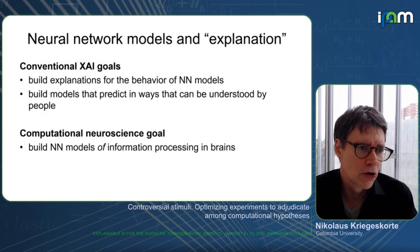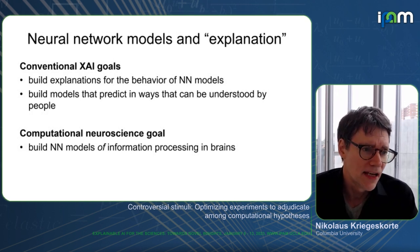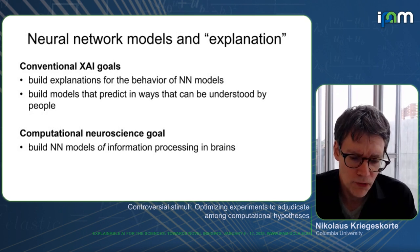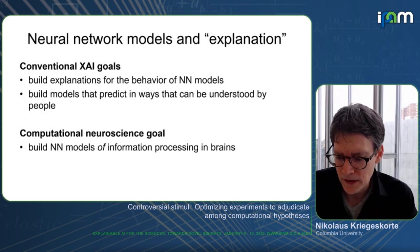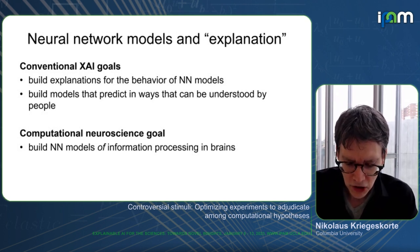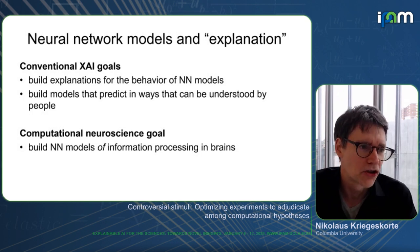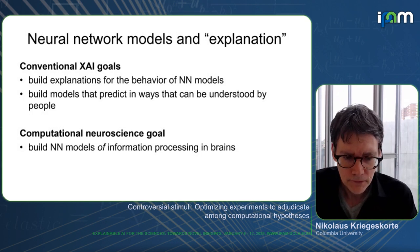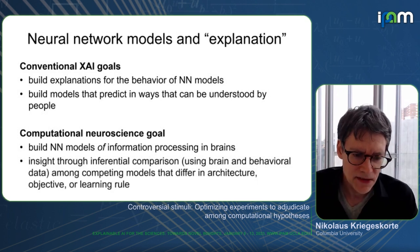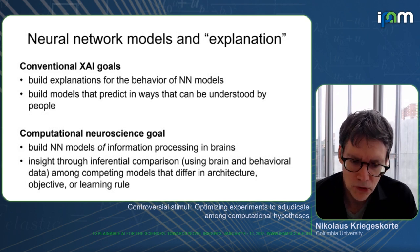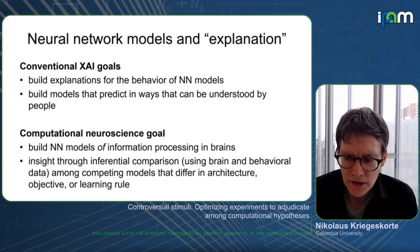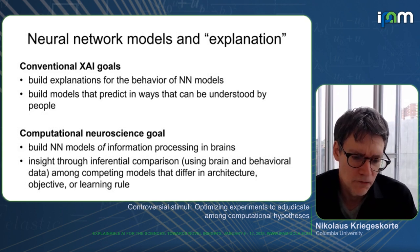These are not models of relationships in the domain we apply our models to, but abstract models of the information processing we think is going on in, for example, the human brain or a monkey's brain doing visual recognition. The insight comes through inferential comparisons using brain and behavioral data among competing models that differ in architecture, objective, or learning rule.